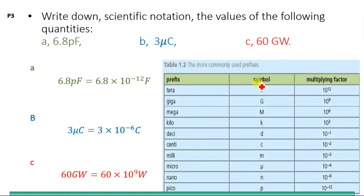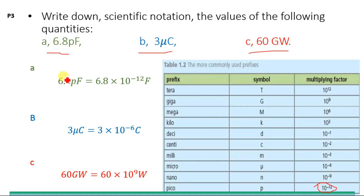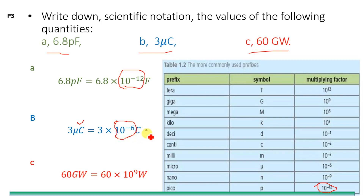Numerical number three: write down in scientific notation the values of the following quantities. The first is 6.8 picofarad. Since pico means 10 power minus 12, substituting gives 6.8 picofarad = 6.8 × 10⁻¹² F. The second is 3 microcoulomb. Since micro equals 10 power minus 6, we have 3 microcoulomb = 3 × 10⁻⁶ coulombs.